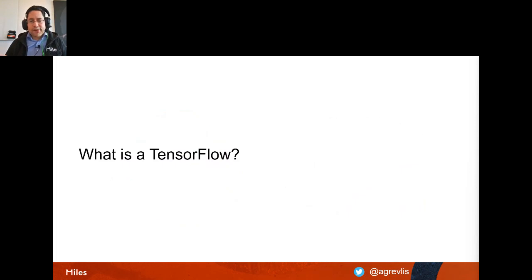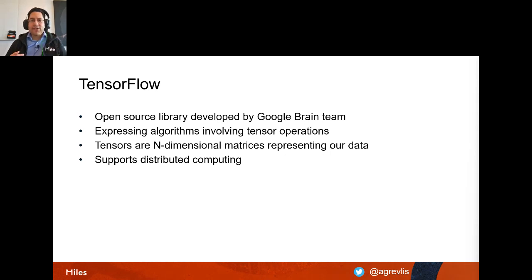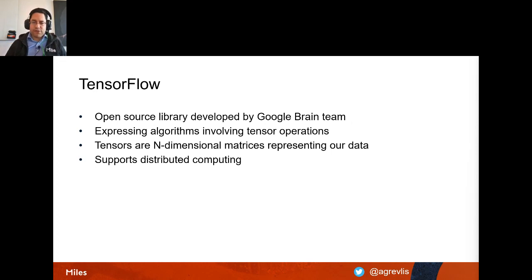TensorFlow is an open-source library developed by the Google Brain team. It uses tensor operations, and one key advantage is that it supports distributed computing, making it a really good candidate for deep learning and neural networks.